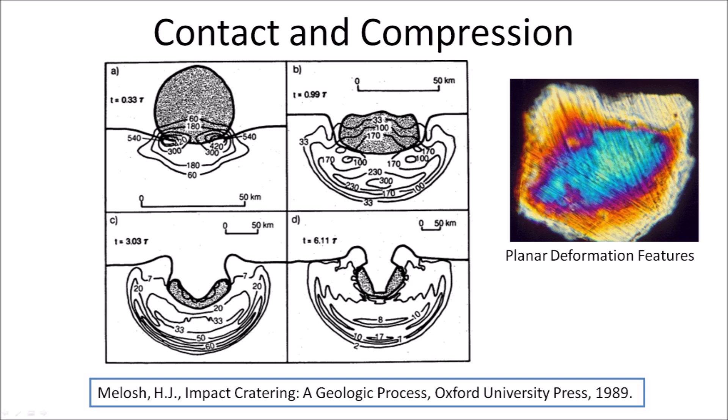Shock pressures developed during the early stages of a hypervelocity impact reach hundreds of gigapascals, far exceeding the yield strength of both projectile and target. The great pressure from hyperspeed impacts creates planar deformation features in quartz crystals that distinguish impact craters from craters formed by terrestrial processes such as volcanism.